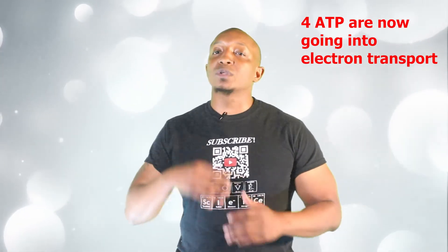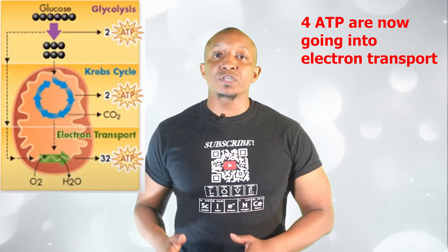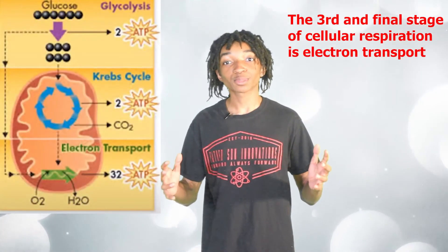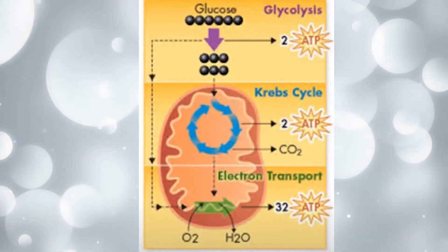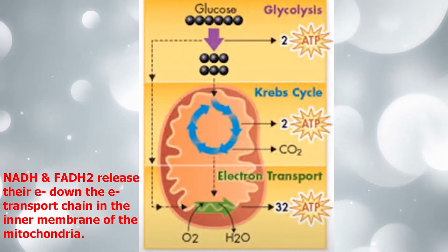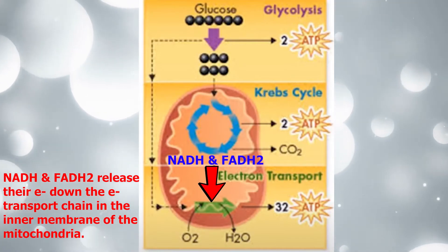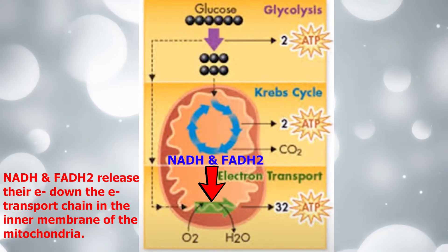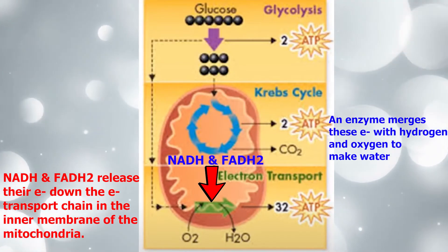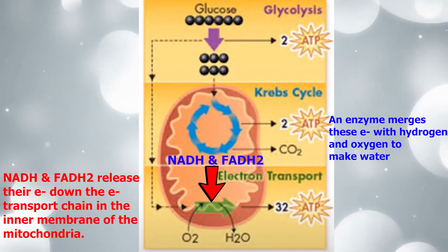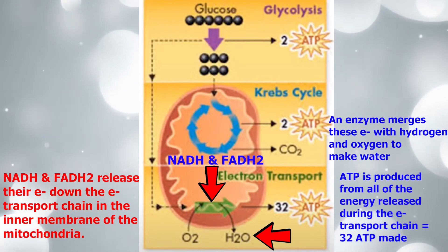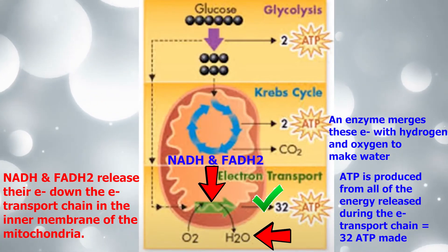Keep in mind that we now have a total of four ATP going into the electron transport chain — two ATP from glycolysis and two ATP from the Krebs cycle. Our third and final stage of cellular respiration is electron transport. During electron transport, the high energy electron carriers NADH and FADH2 release their electrons down the electron transport chain, which is a series of proteins located in the inner membrane of the mitochondria. An enzyme at the end of the electron transport chain merges these electrons with hydrogen and oxygen to make water. Another enzyme produces ATP from all of the energy released during the electron transport chain, which produces 32 molecules of ATP.